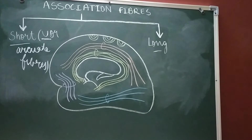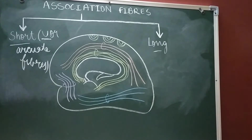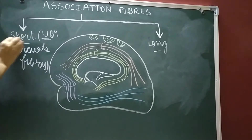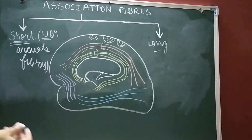Talking about the long association fibers — all the other fibers you can see in the diagram are long association fibers. As the name indicates, these fibers travel for long distances and interconnect widely separated gyri, meaning gyri situated in different lobes. Short association fibers connect adjacent gyri over a short distance, while long association fibers travel long distances, connecting different lobes of the same hemisphere.